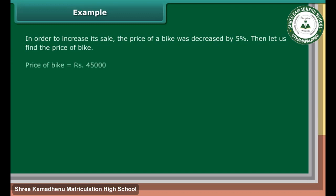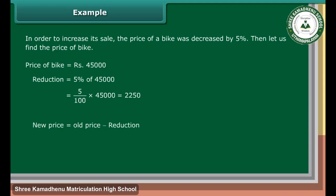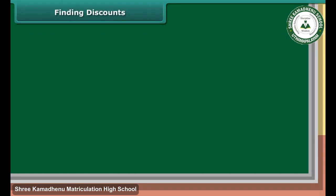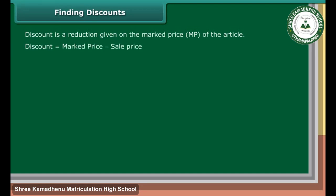In order to increase its sale, the price of a bike was decreased by 5%. Price of bike is equal to Rs. 45,000. Reduction is equal to 5% of Rs. 45,000, which is equal to 5 upon 100 into Rs. 45,000, which is equal to Rs. 2,250. New price is equal to old price minus reduction, which is equal to Rs. 42,750. Discount is a reduction given on the market price (MP) of the article. Discount is equal to market price minus sale price.